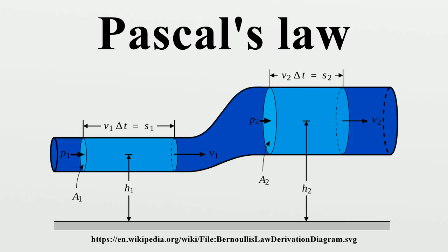If a U tube is filled with water and pistons are placed at each end, pressure exerted against the left piston will be transmitted throughout the liquid and against the bottom of the right piston. The pressure that the left piston exerts against the water will be exactly equal to the pressure the water exerts against the right piston. Suppose the tube on the right side is made wider and a piston of a larger area is used.